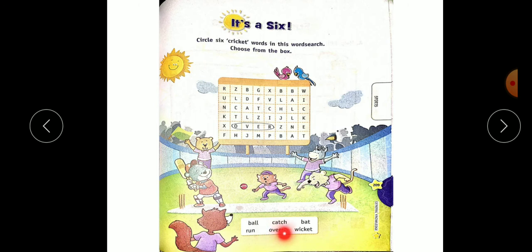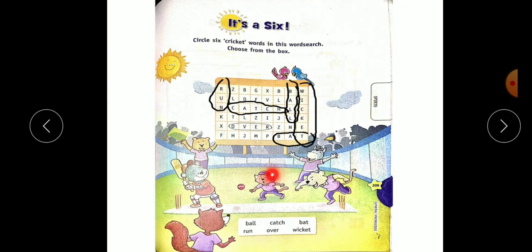Now next is O-V-A-R, over. W-I-C-K-E-T, wicket. Where is wicket? Here. So aap ko aise saare words pe circle banana hai. Like this, you have to draw circle on this word.